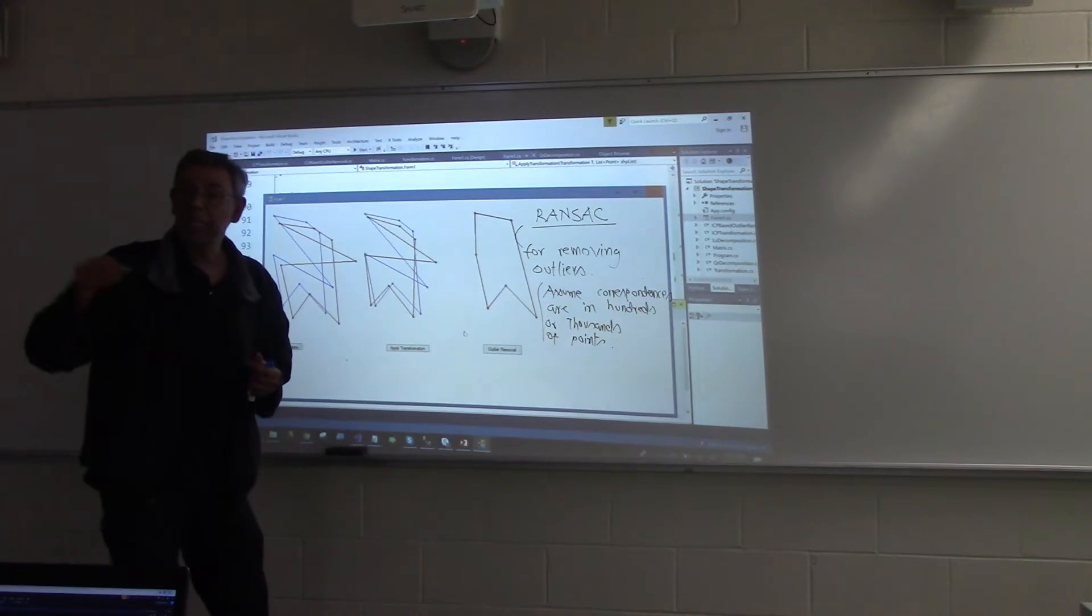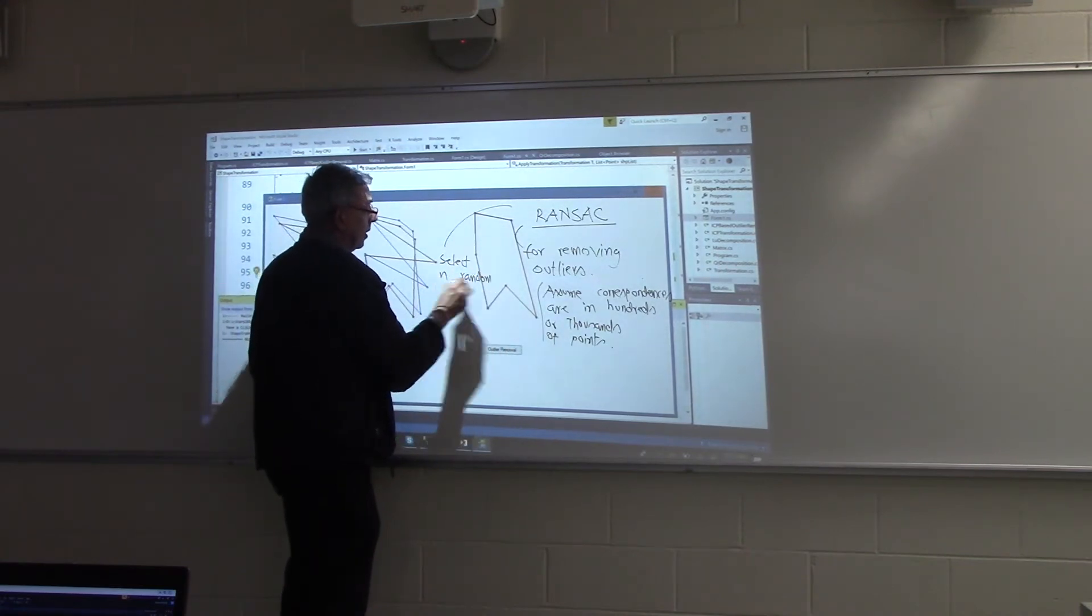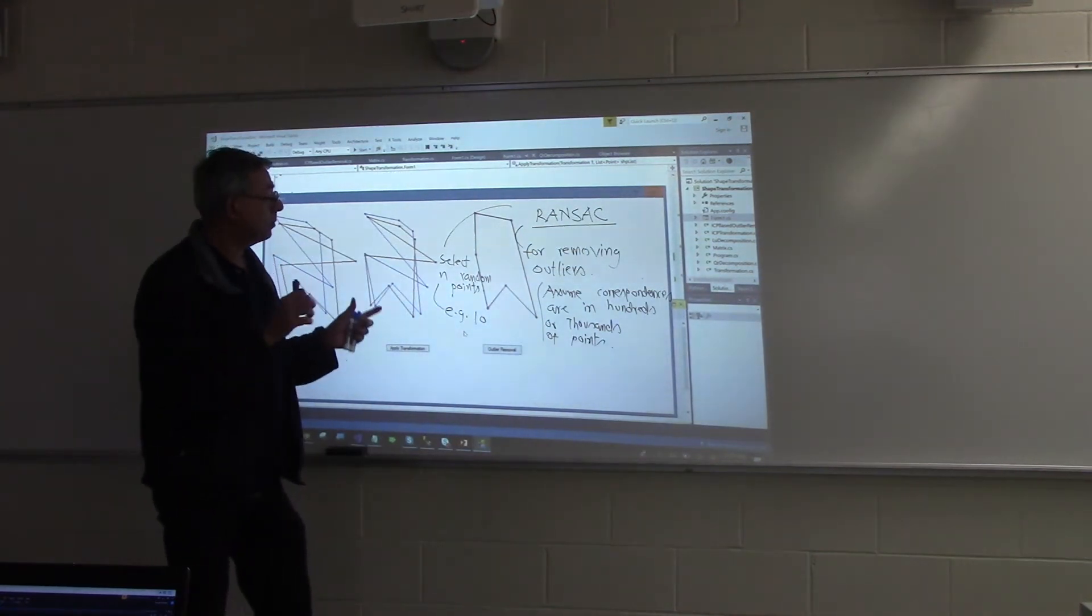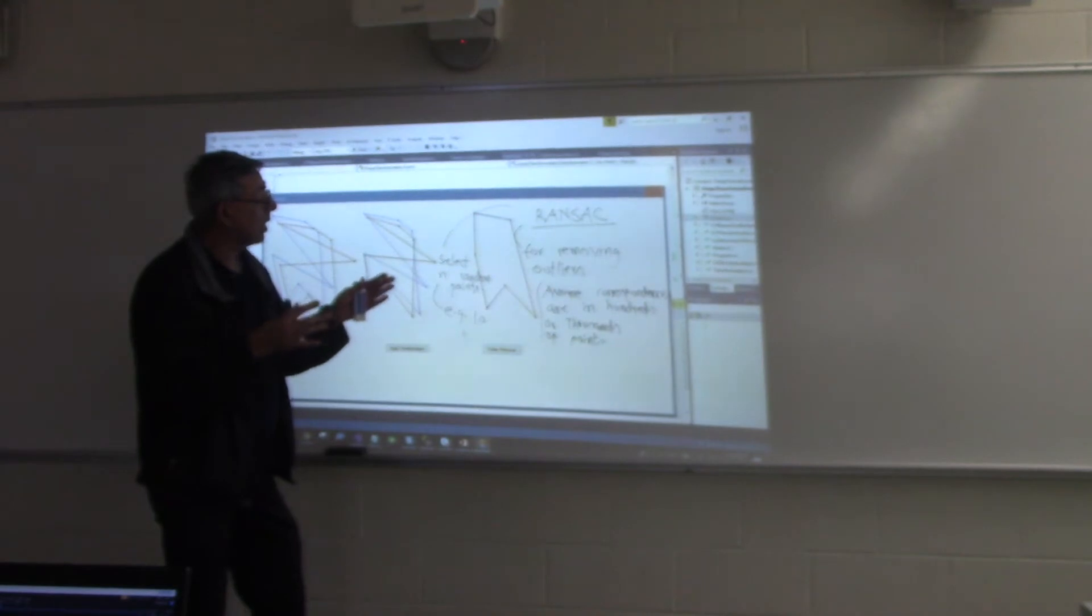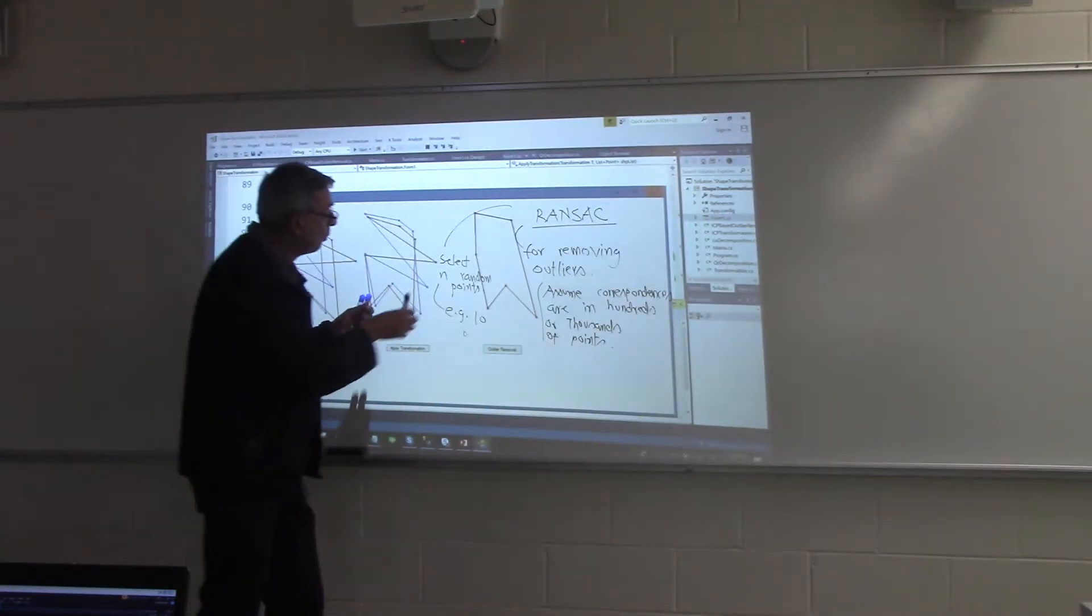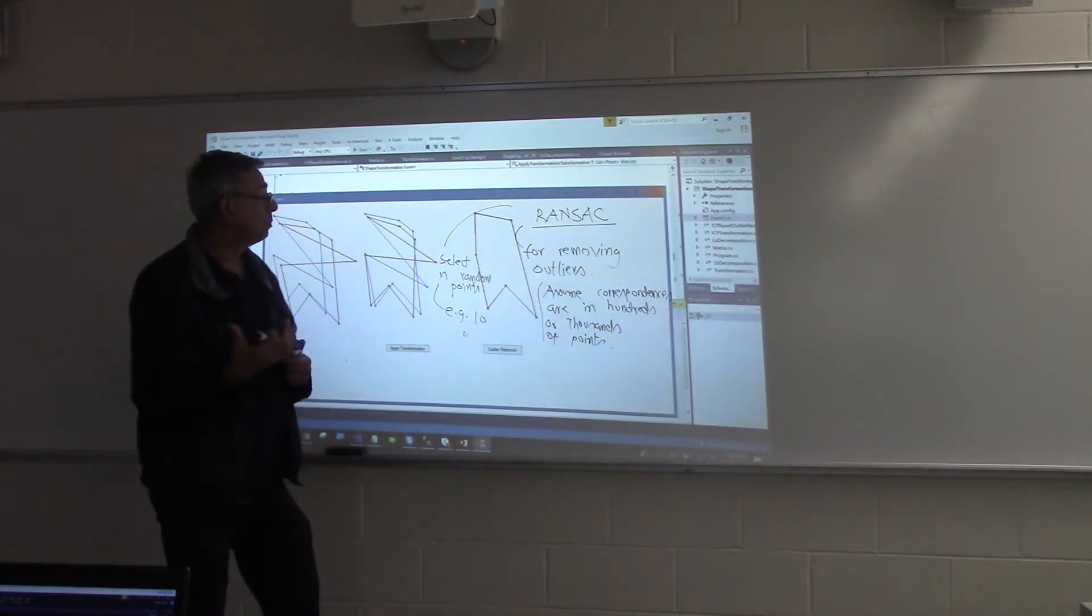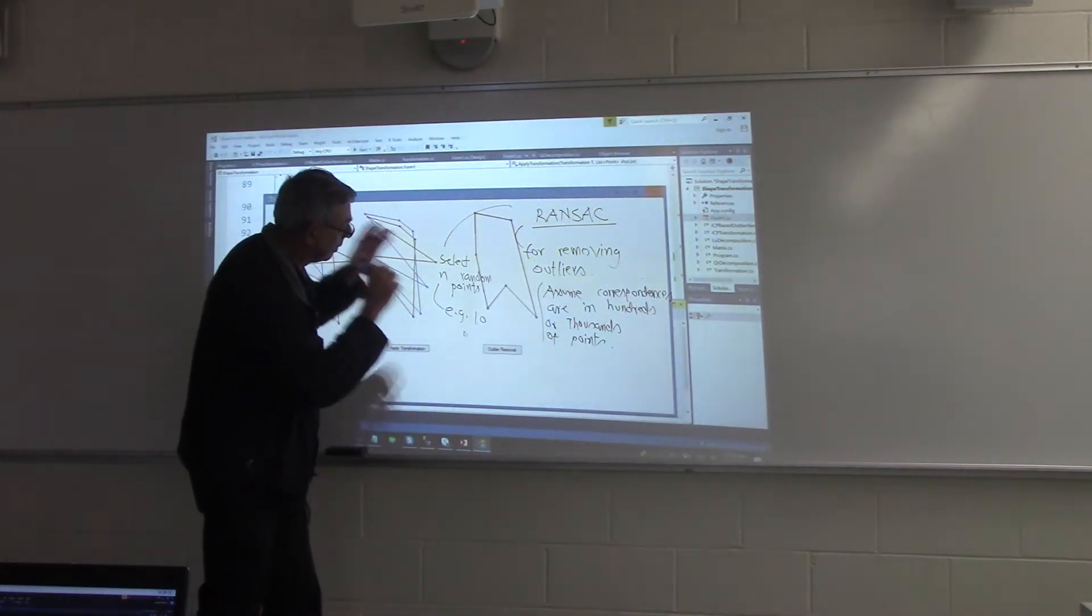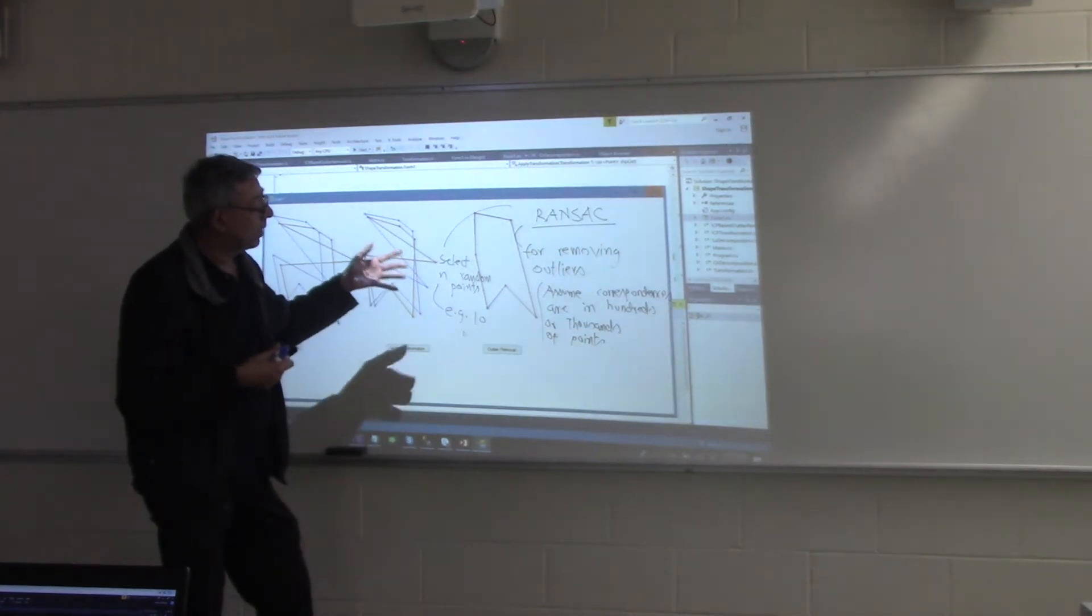Rather than iteratively going one at a time, what we typically do in RANSAC is select, let's say, n random points. N could be, for example, ten or fifteen or whatever. Based on those ten selected random points, we create that transformation and see what is the cost now in the overall model. Then we randomly select a few other points, add to this to see whether it improves the cost or makes it worse. And we repeat this process many, many times. Rather than doing it iteratively over all data, we are now doing a random sampling of the data to decide what would be a proper model.